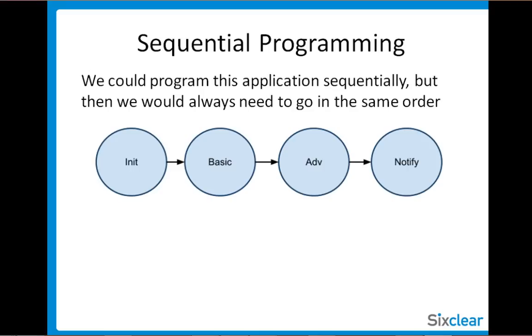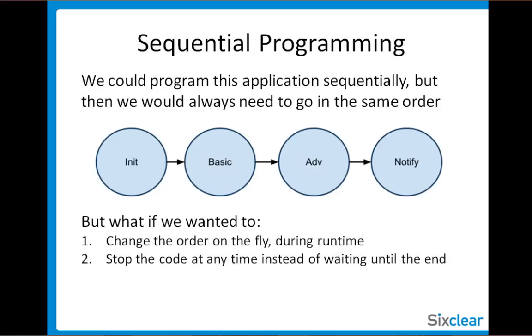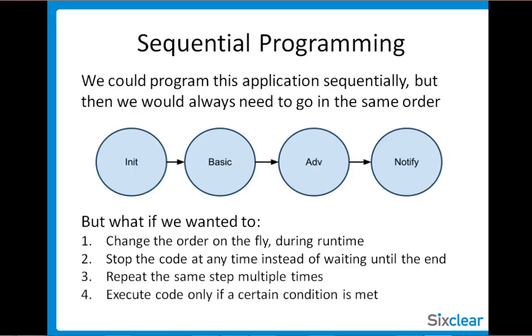Now we could program this application sequentially, but then we would always need to go in the same order. But what if we wanted to change the order on the fly during runtime? Or stop the code at any time instead of waiting until the end? Or repeat the same step multiple times? Or execute some code only if a certain condition is met? These are difficult or impossible to do with sequential programming, but all really easy with state programming.